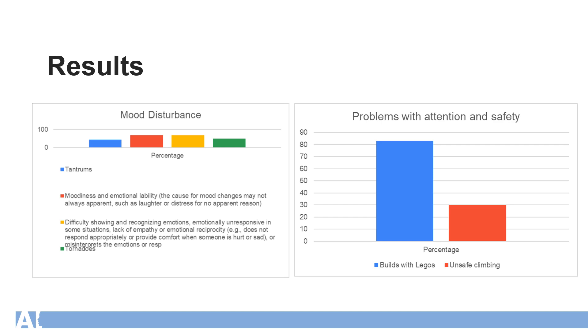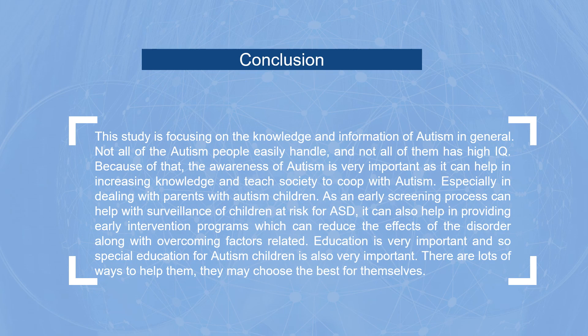In the attention and safety section, children tend to be more engaged with familiar items such as Legos. As a conclusion, this study focuses on knowledge and information of autism in general. Not all autism people are easy to manage, and not all of them have high IQ. Awareness of autism is very important as it helps increase knowledge and teaches society to cope with autism, especially in dealing with parents of autistic children. Early screening can help surveillance of children at risk for ASD and assist in providing early intervention programs to reduce the effects of the disorder.